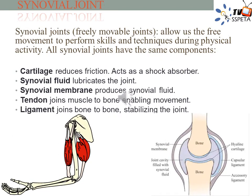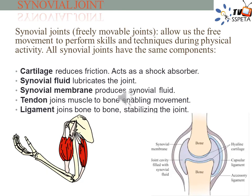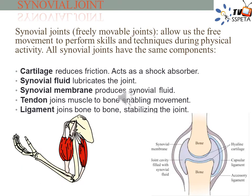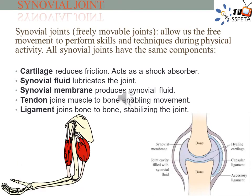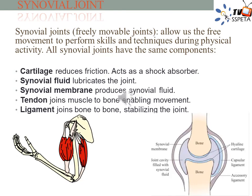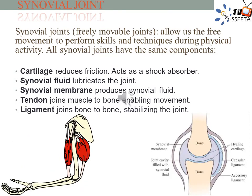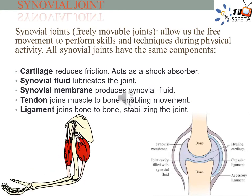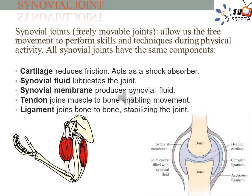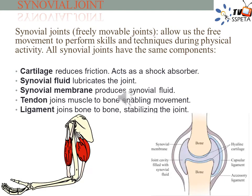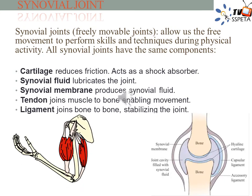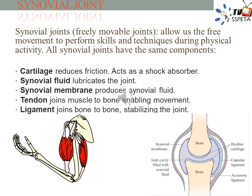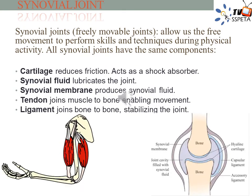Freely movable joints or synovial joints — these joints permit maximum movement between the bones involved. All synovial joints have the same components: cartilage reduces friction and acts as a shock absorber; synovial fluid lubricates the joint; synovial membrane produces synovial fluid; tendons join muscle to bone enabling movement; and ligaments join bone to bone, stabilizing the joint. They are also called diarthrosis and are further classified into six types depending on the kind of movements possible.